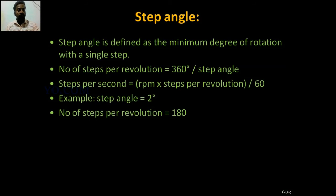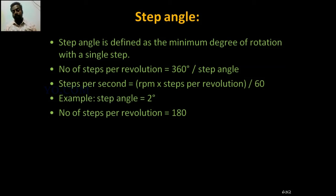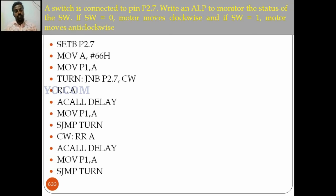For an example problem, step angle = 2 degrees, so the number of steps per revolution = 360 / 2 = 180 steps. Steps per second = RPM × steps per revolution / 60. These are the formulas used for one-mark and two-mark questions.